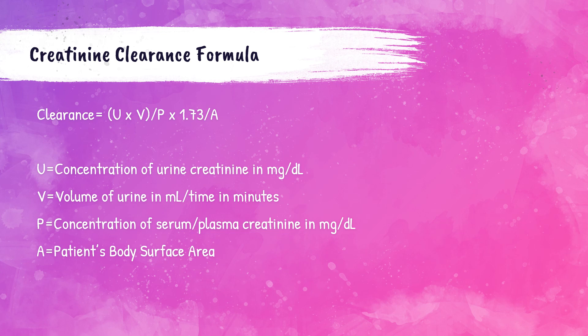A lot of students struggle understanding where this all comes from. They get the calculation part once we work through practice problems, but they ask: how does this happen in the laboratory? What happens is the doctor orders a creatinine clearance on a patient, and the patient is given a 24-hour urine collection jug — usually a big amber-looking bottle. The patient collects the entirety of their urine over a 24-hour period in this jug. The jug has measurement increments on the outside so we can measure how much urine they collect.